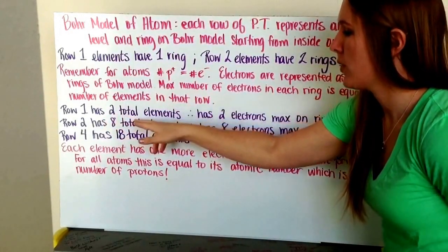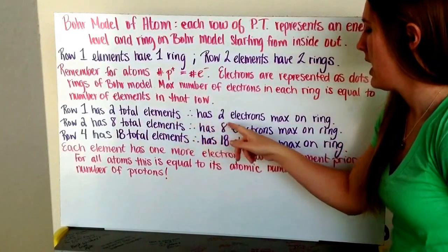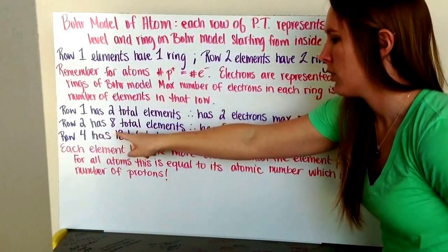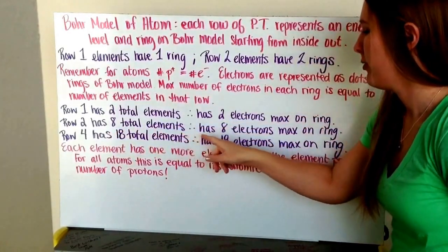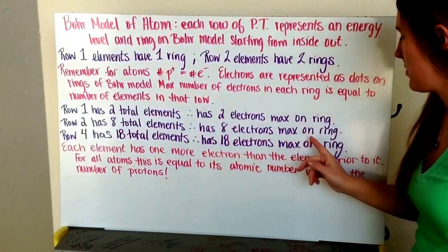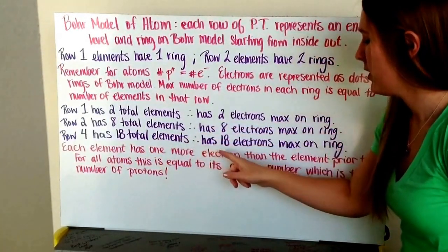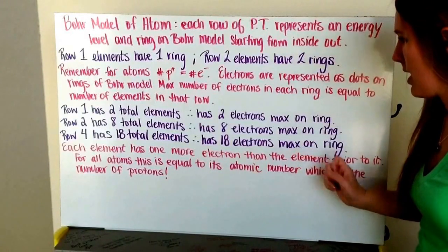of protons in that row. So row one has two total elements, therefore has two electrons maximum on the ring. Row two has eight total elements, and therefore has eight electrons maximum on the ring. And row four has eighteen total elements, and therefore has eighteen electrons maximum on the ring.